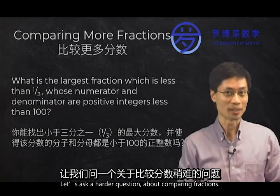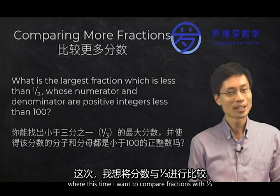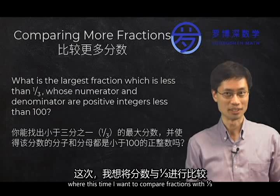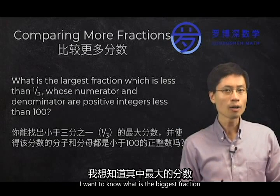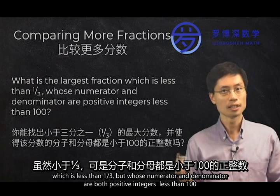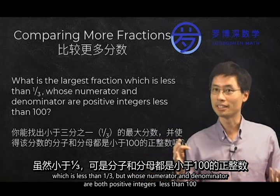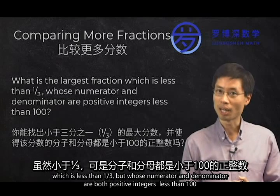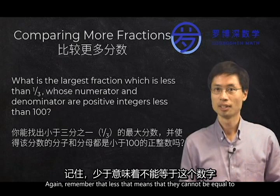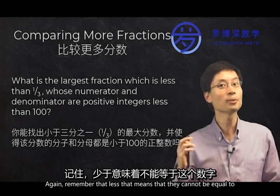Let's ask a harder question about comparing fractions, where this time I want to compare fractions with one-third. I want to know what is the biggest fraction which is less than one-third, but whose numerator and denominator are both positive integers less than 100. Remember that less than means that they cannot be equal to one-third.